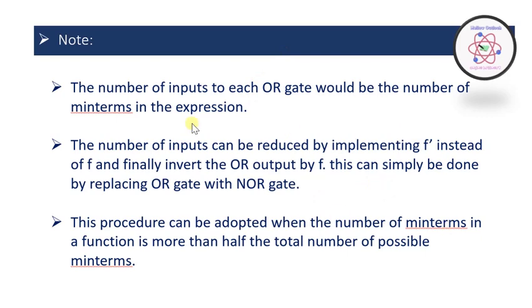An important note: the number of inputs to each OR gate equals the number of min terms in the expression. The number of inputs can be reduced by implementing F-bar, the complemented version, instead of F, and then inverting the OR output to get F. This means you can simplify by replacing the OR gate with a NOR gate. This procedure is adopted when the number of min terms in a function is more than half the total number of possible min terms.